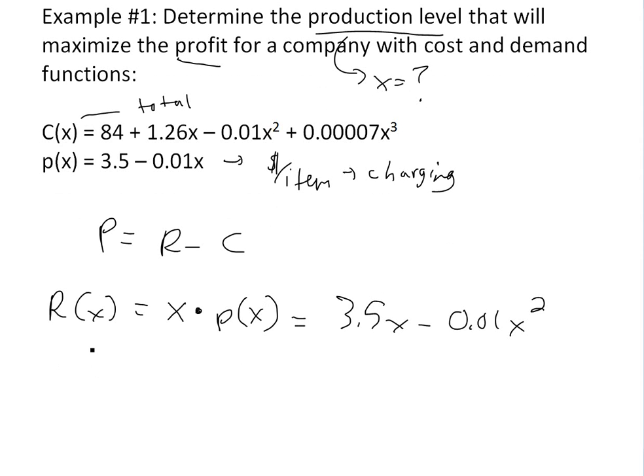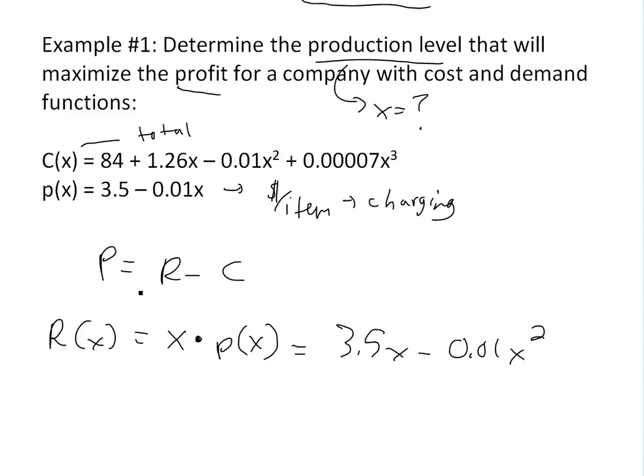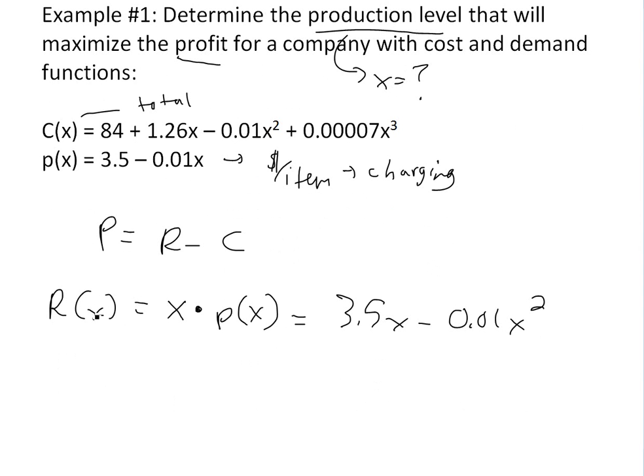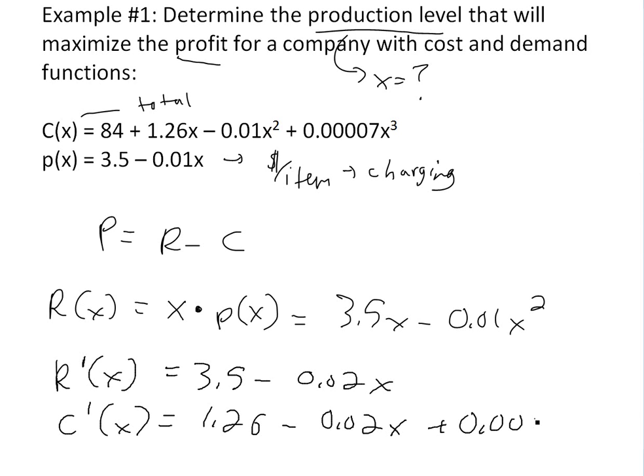Recall that the marginal revenue is just a derivative. Right now we have revenue, we have cost. Profit is max when the marginal revenue equals marginal cost, so we just take the derivative. R prime of X is going to be equal to 3.5 minus 0.02X using power rule. And then the derivative of the cost function is just going to be 1.26 minus 0.02X plus 0.00021X squared.